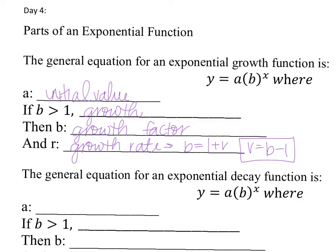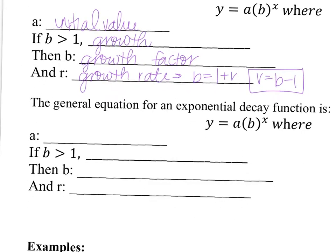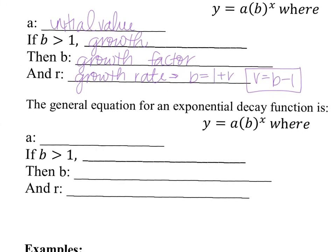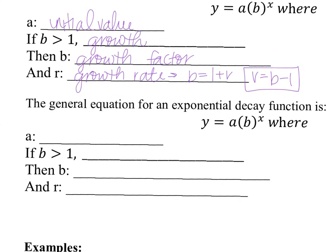Now let's look at exponential decay. It's not much different, except for a little bit. This is looking at not b greater than 1 — that's exponential growth — it's actually where b is greater than 0 but less than 1. That's exponential decay.